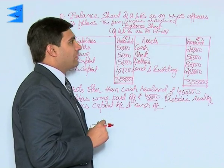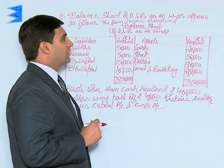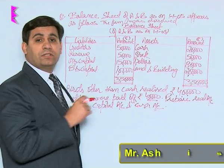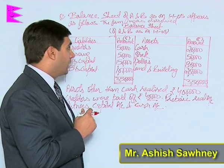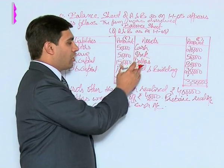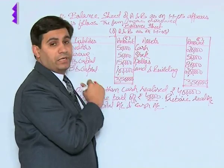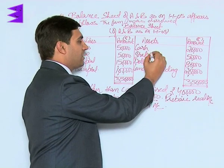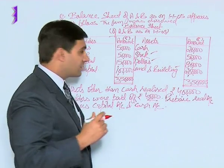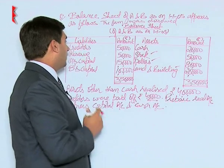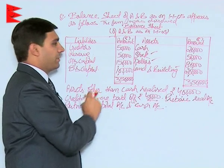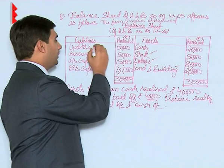The balance sheet of A and B as on 1st January 2005 appears as follows. On this date the firm was dissolved. The balance sheet shows assets of cash, stock, debtors, and land and building. On the liability side we have creditors, reserves, A's capital and B's capital.